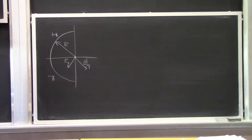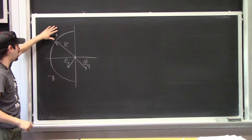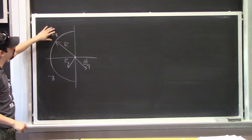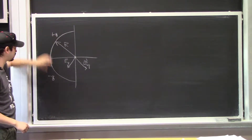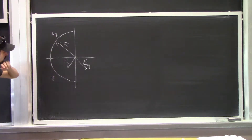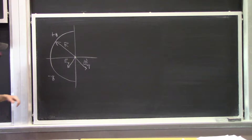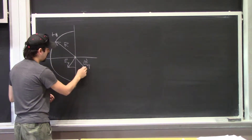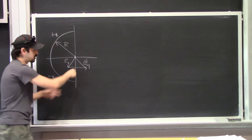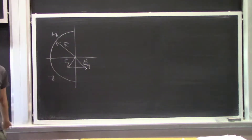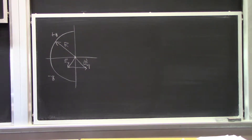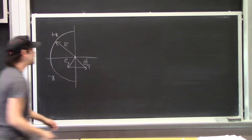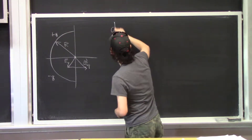Because of symmetry here — this is the exact same amount of charge, one positive and one negative — what we can expect is that the X components of these electric fields are going to cancel each other. So let's write down our equation and then set it up.